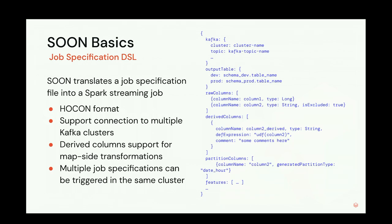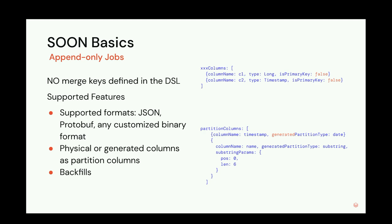For the merge scenario, Swoom translates the specification file into a merge query and executes it in the foreachBatch API for each micro-batch. The specification file is in HOCON format. Users need to specify the source Kafka cluster and topic to read from, the target table, and define the schema in the raw columns section. In the future, we want to integrate with an external schema service so schema can be provided automatically. Users can also create derived columns from raw columns using UDFs — either user-implemented UDFs or built-in Spark UDFs.